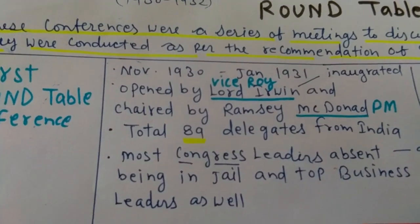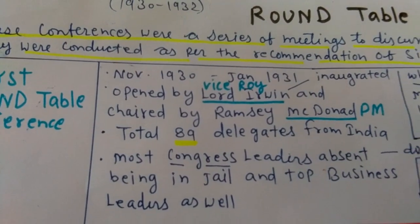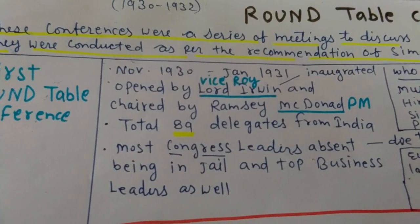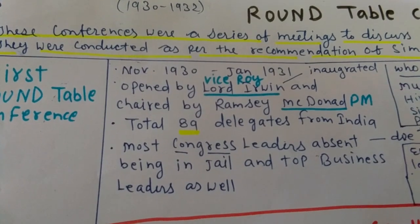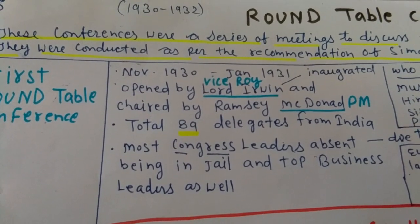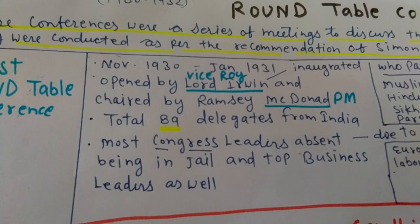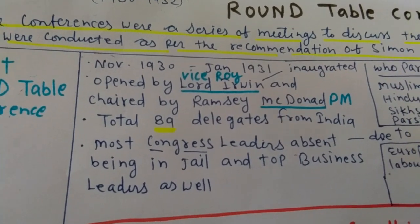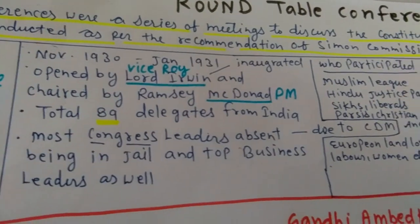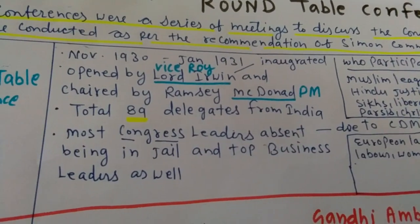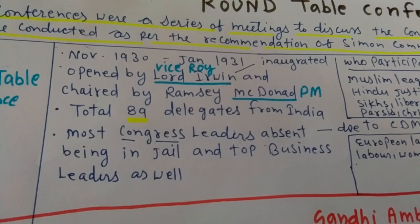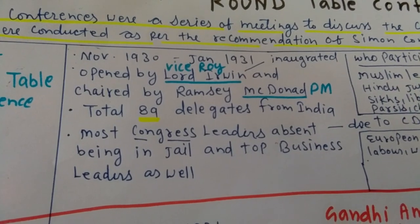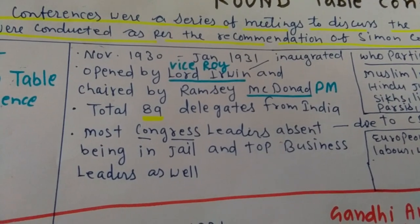Lord Irwin was the Viceroy of India and Ramsay MacDonald was the Prime Minister of Britain at that time. In the First Roundtable Conference, a total of 89 delegates from India participated. Most Congress leaders were absent due to the Civil Disobedience Movement — they were in jail and top business leaders also could not reach the roundtable conference.